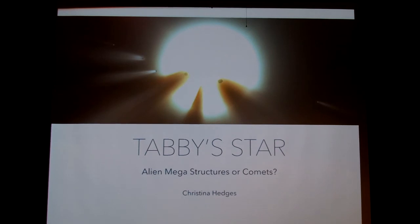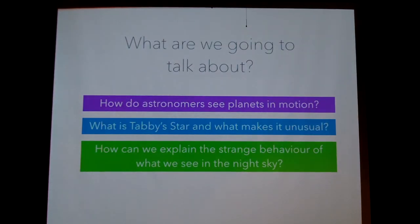So I'm going to start by telling you what we're going to talk a little bit about. So I'm going to go over, just very briefly, how astronomers see planets and objects in emission. Then we're going to talk a little bit about Tabby's Star and what makes it so unusual. In the news, this has been talked about as the star that's baffling astronomers. And so we'll talk about why that actually, truly is the case. And then we'll wrap up with how we can explain strange behavior and what we see in the night sky. And hopefully talk to you a little bit about some of the explanations for Tabby's Star. But I'm afraid I don't have the answers for you.